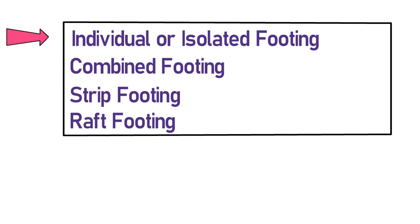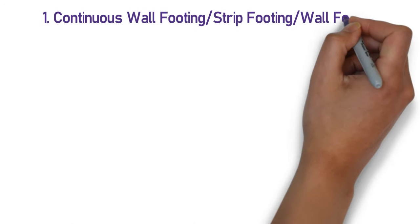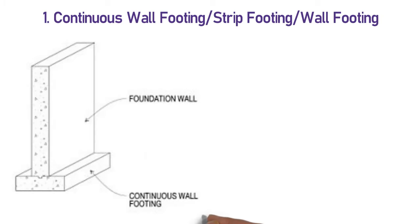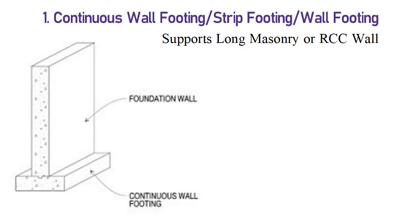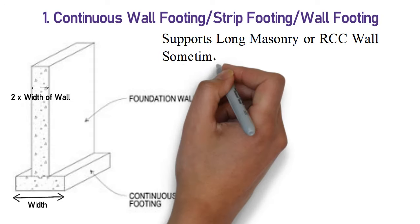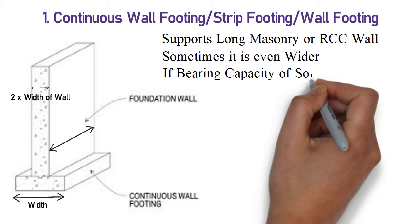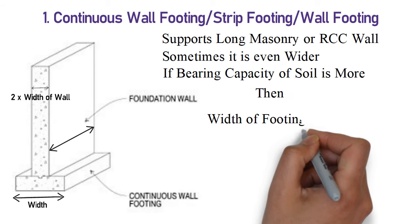Let us discuss types of shallow foundations one by one. First, continuous wall footing, which is also known as strip footing or wall footing. The footing which supports a long masonry or RCC wall is known as continuous footing. In this type of footing, the width of footing is twice the width of the wall rested on it, and sometimes it is even wider. Basically, it runs throughout the length of the wall. If the bearing capacity of soil is more, then the width of strip footing will be lesser.